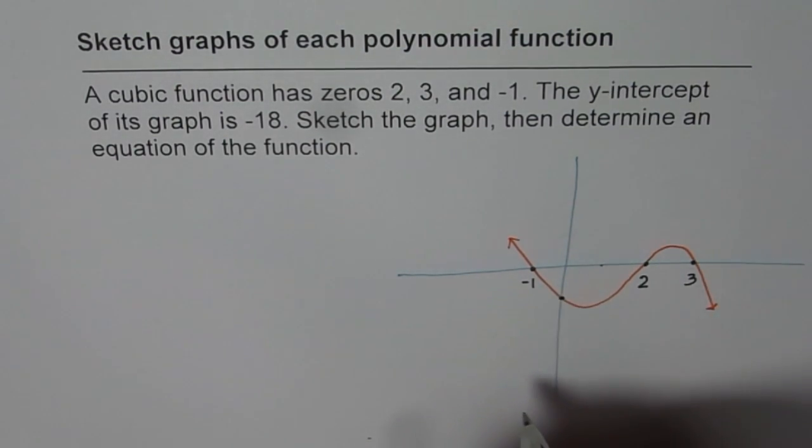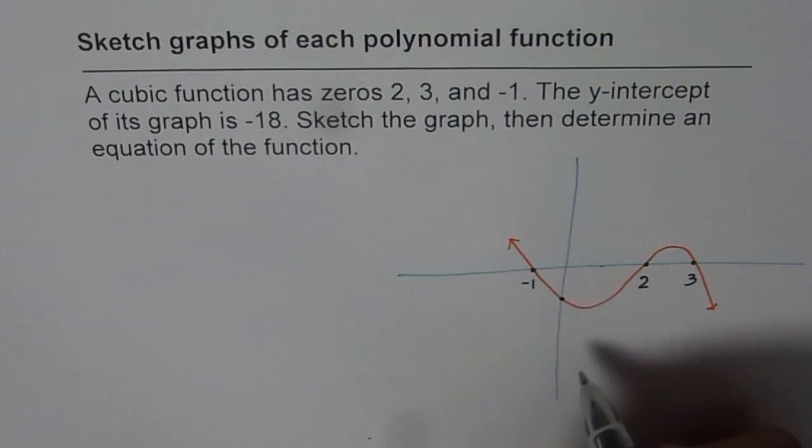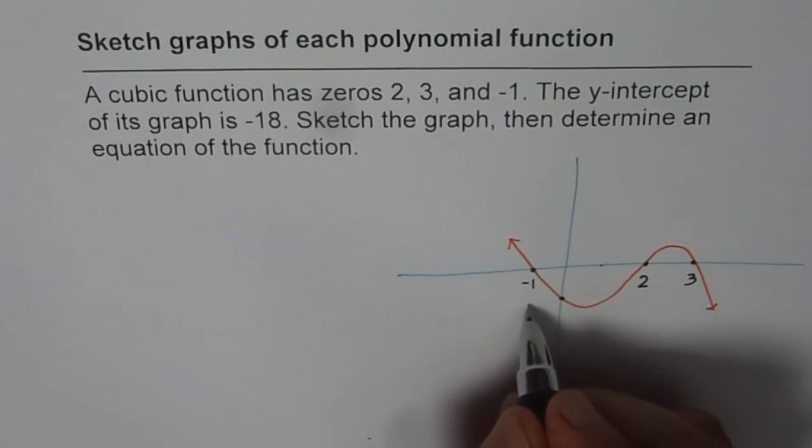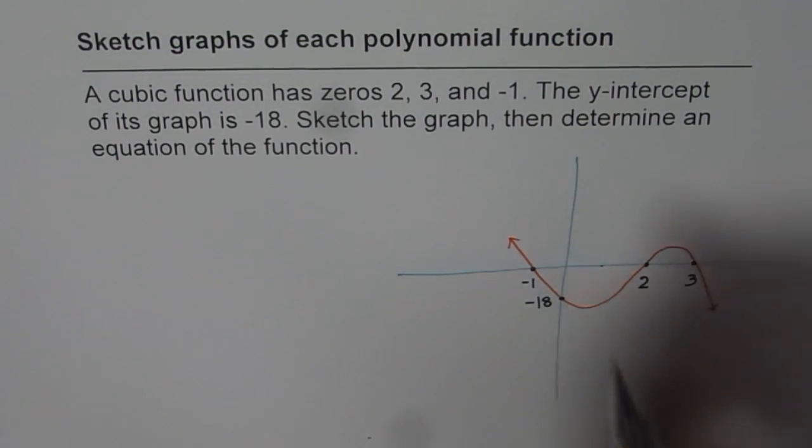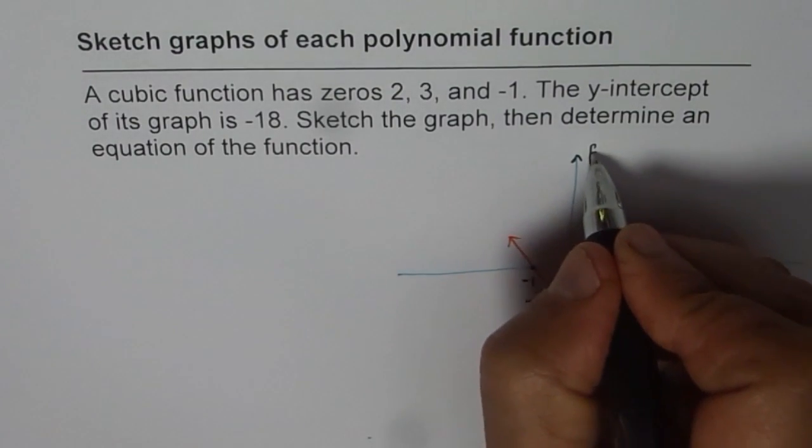Now, wherever it crosses, that is your Y-intercept, is given to you as minus 18. So, don't hesitate to write minus 18. So, we get a cubic function here and that is the function F of X.